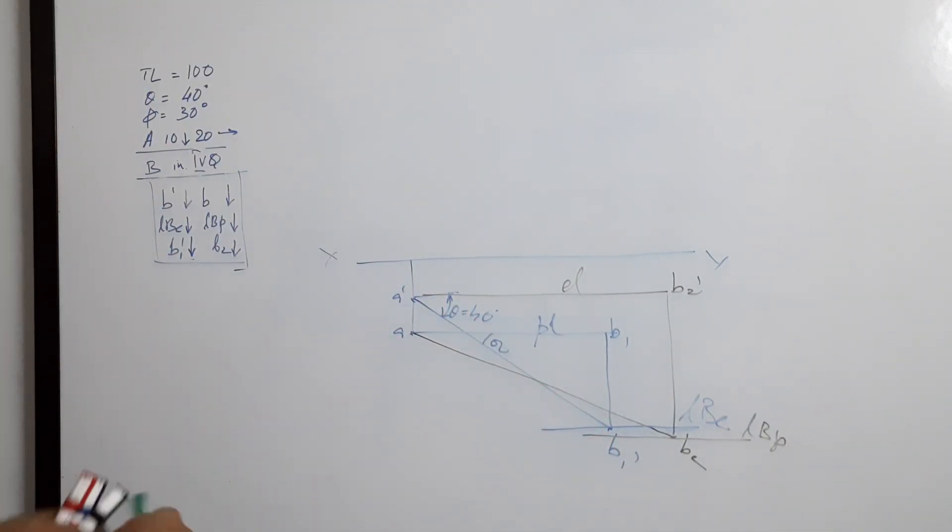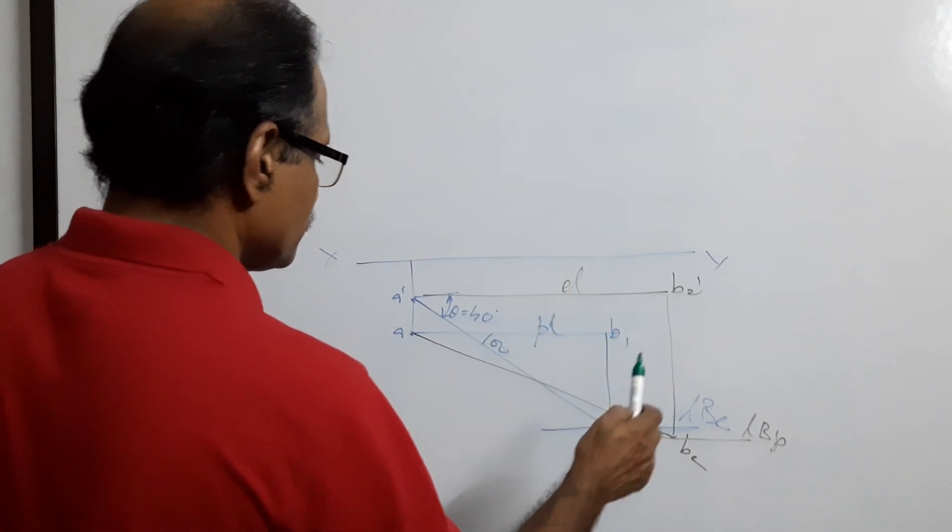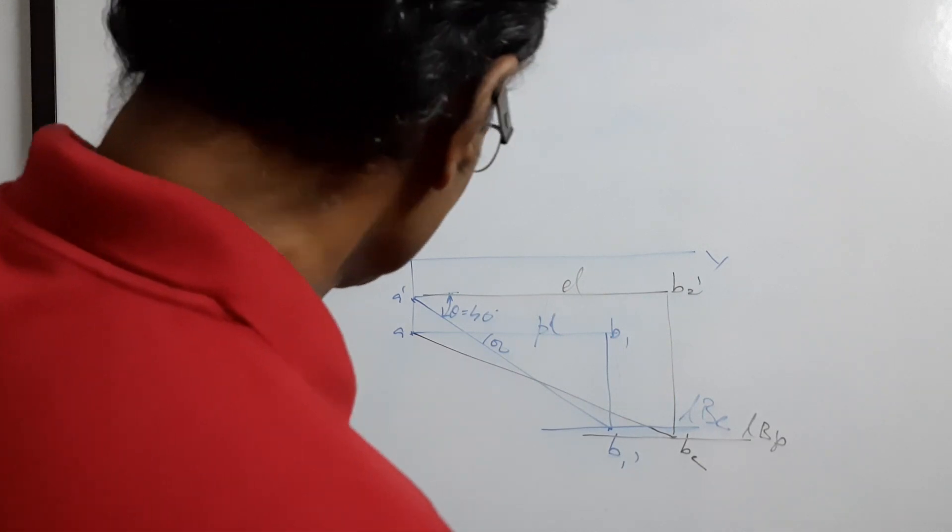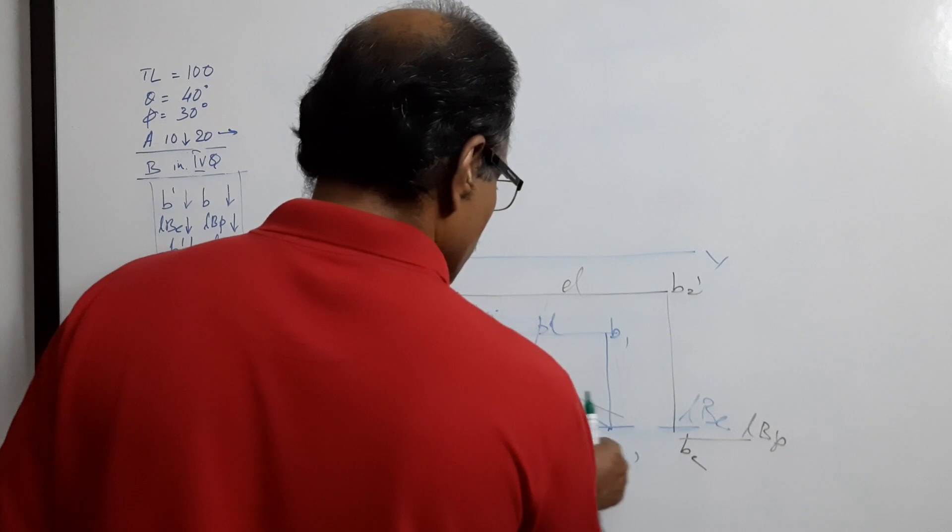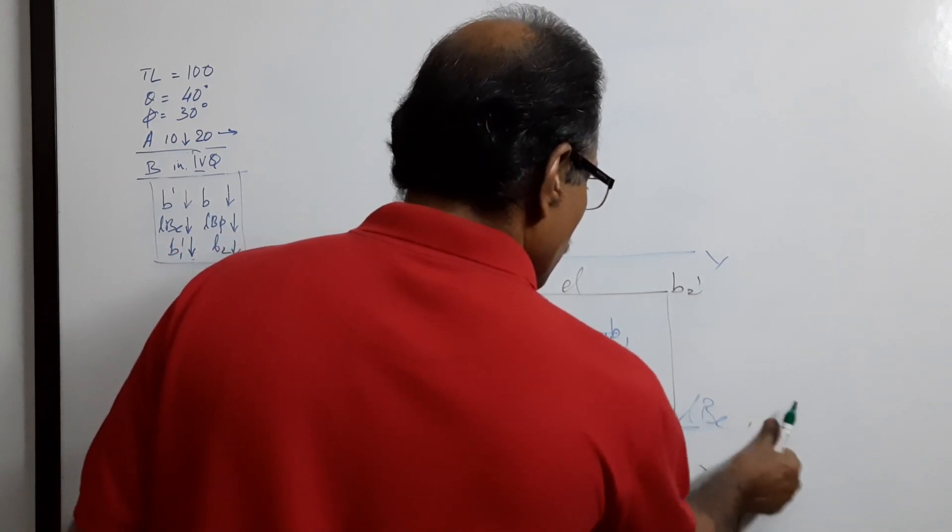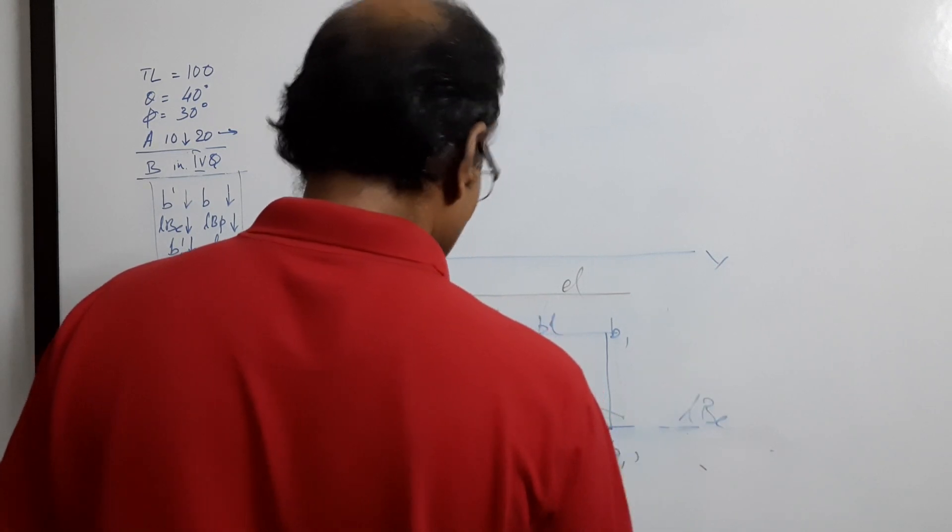Draw A' center, elevation length as radius, cut L B of weight. It will not come down, it will be above, it will come somewhere here.